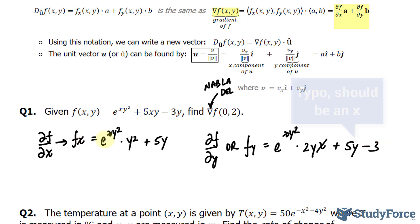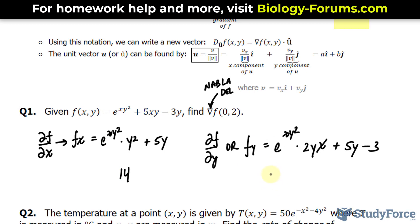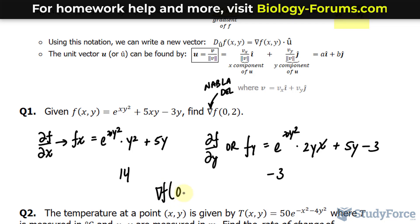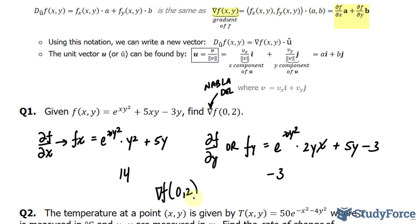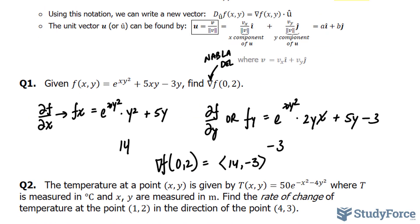Now our job is to evaluate these at zero and two. If you evaluate the partial with respect to x correctly at zero and two — you can use your calculator for this — you should end up with 14. And for the partial with respect to y, you should end up with negative 3. So the gradient of f at zero and two can be represented by the vector [14, -3].